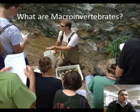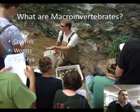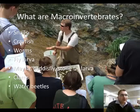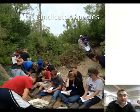Some examples that we will find in the stream are snails, crayfish, worms, fly larvae, mayfly, caddisfly, or stonefly larvae, clams, and water beetles.